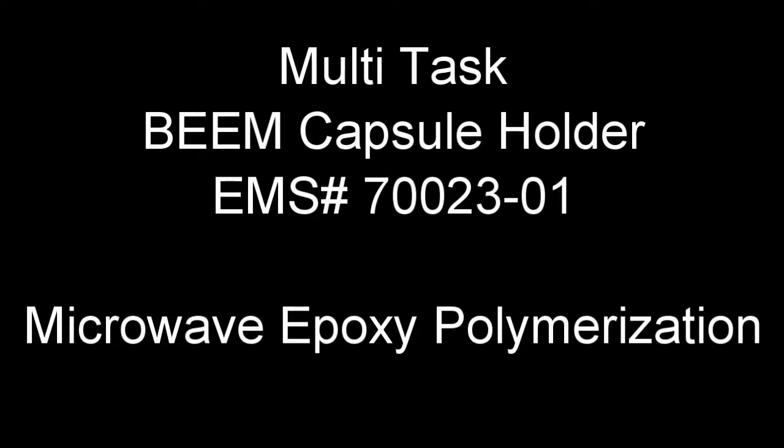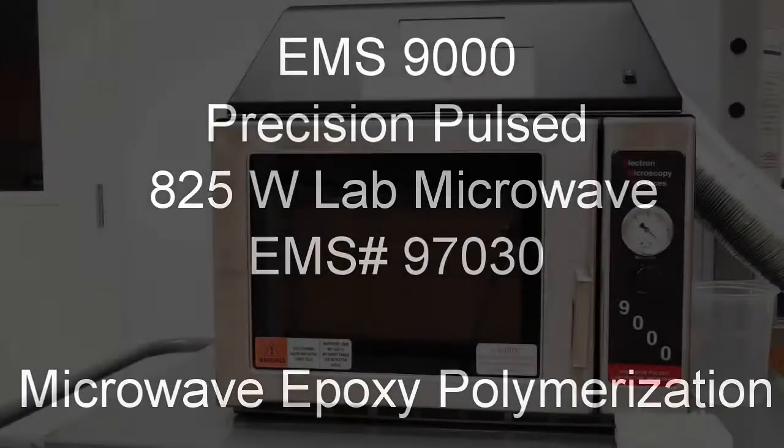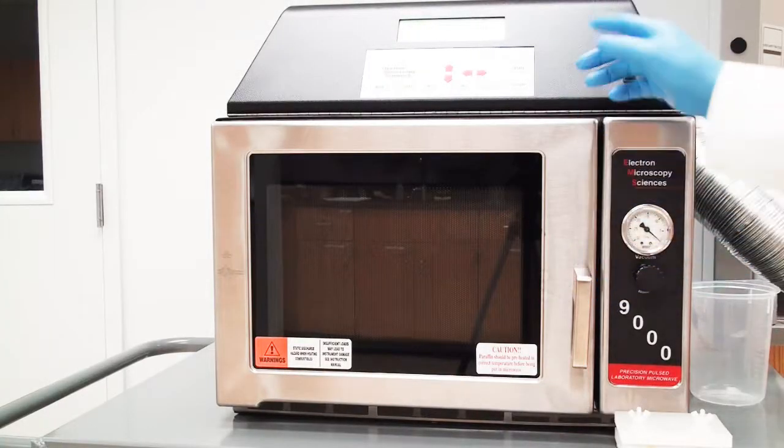Today we're going to look at polymerization of epoxy resin using the microwave and the multi-task beam capsule holder. The microwave will be the EMS 9000, it's a 825 watt microwave, and we use it primarily for our processing run, but also for rapid polymerization.